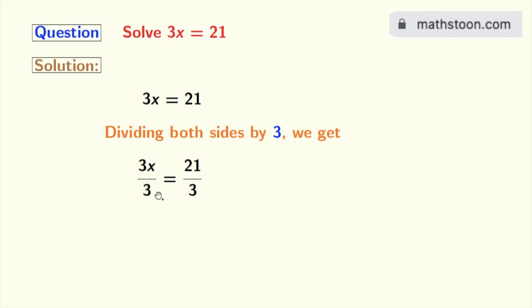3x/3 = 21/3. Now in the left-hand side, look that 3 is in both the numerator and the denominator, so this gets cancelled and we are left with x. And in the right